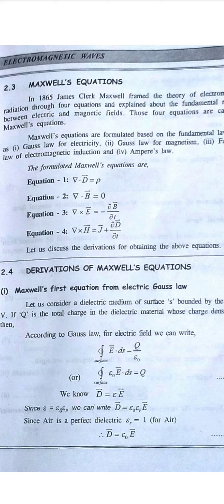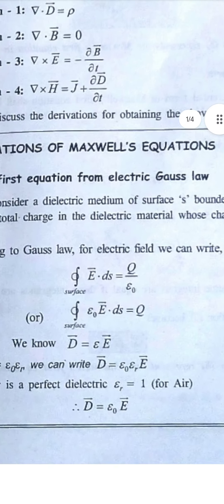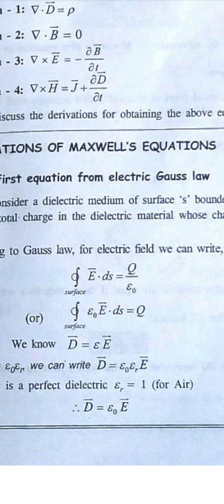For equation one, the Gauss law, the total flux is equal to one by epsilon not times the charge density. The formula is: surface integral of E dot ds equals Q by epsilon not.